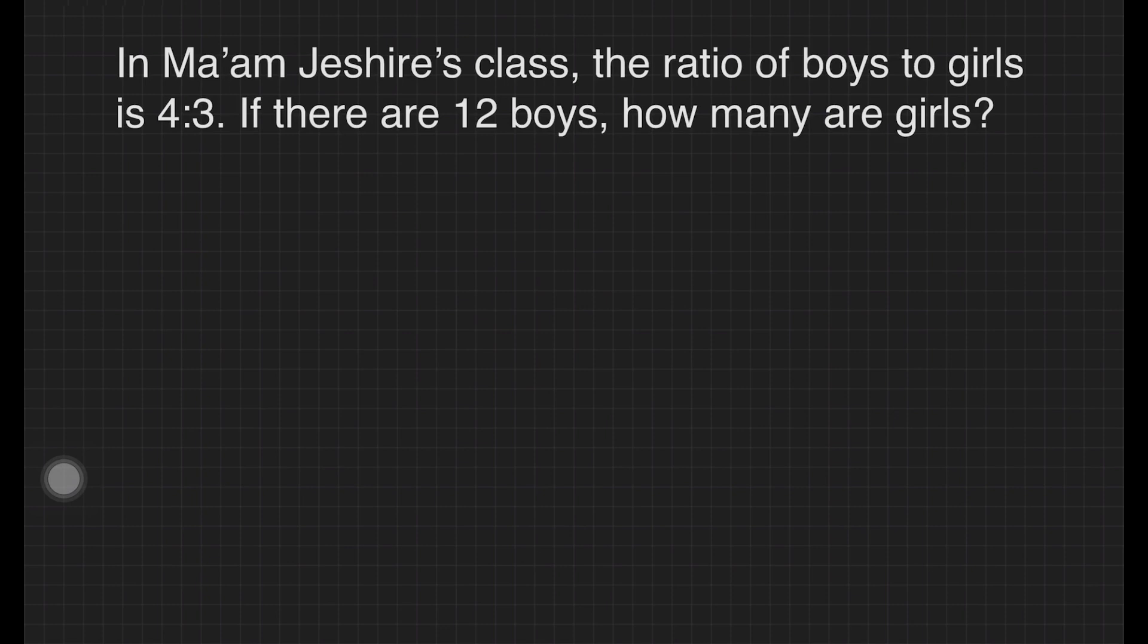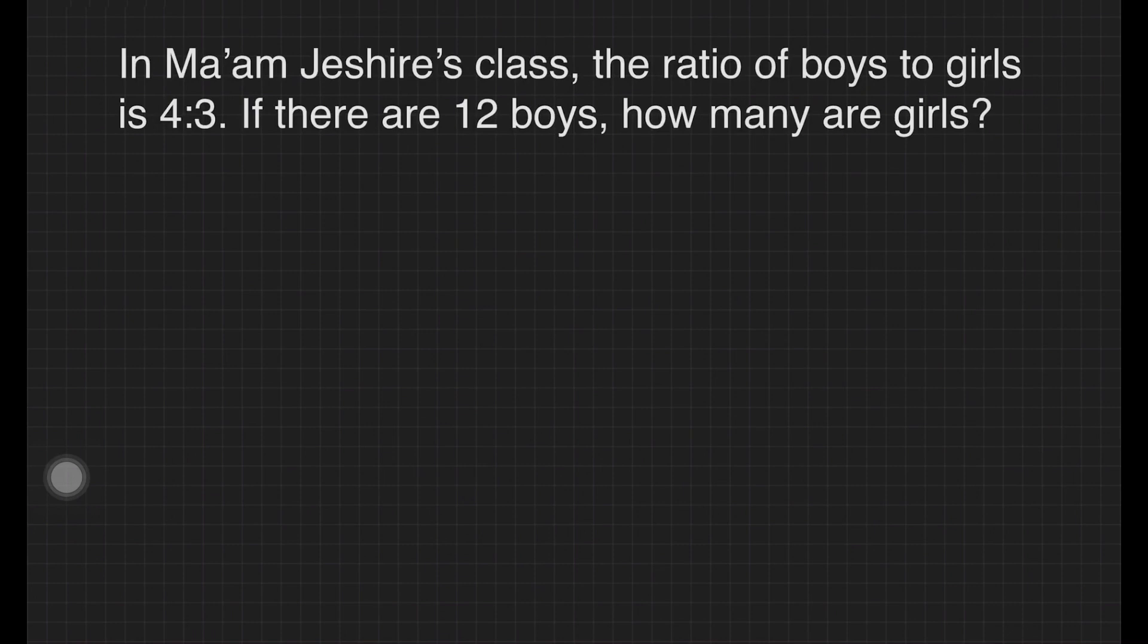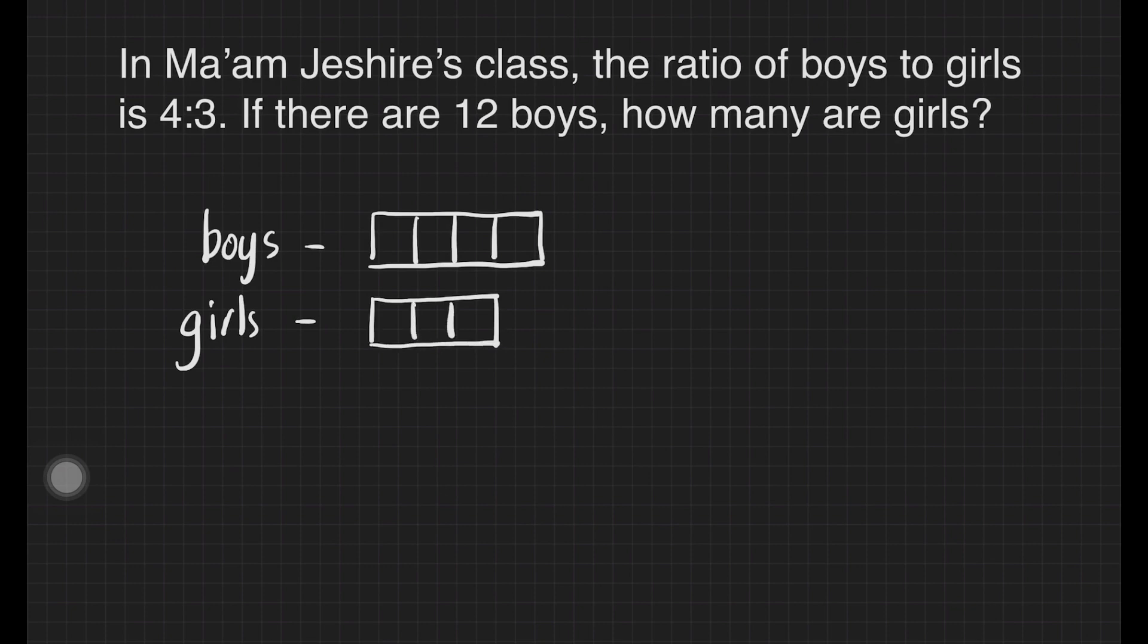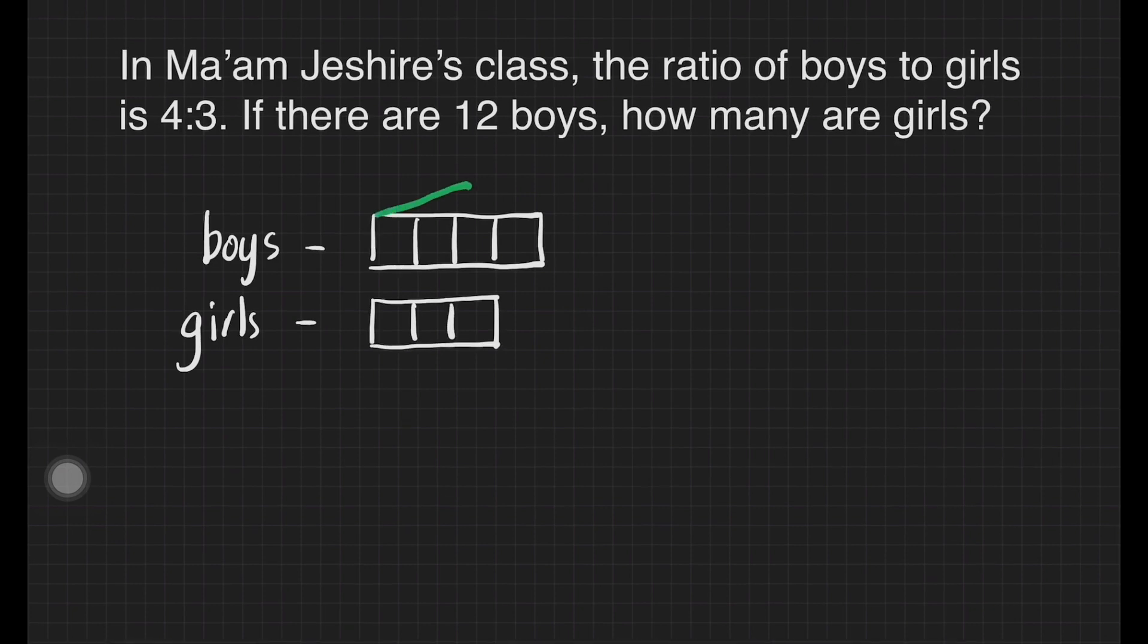To solve this problem, we may use a model in understanding and visualizing it. For the boys, we can draw 4 boxes, and for the girls, 3 boxes. These 4 boxes for the boys is equivalent to 12. That makes 12 divided by 4 is equal to 3, making our boxes filled out with 3.